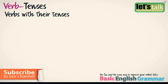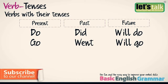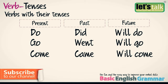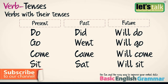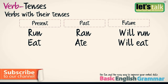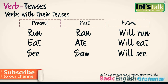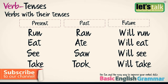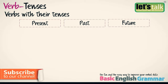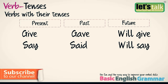Now let's look at verbs with their tenses. Do, Did, Will Do. Go, Went, Will Go. Come, Came, Will Come. Sit, Sat, Will Sit. Run, Ran, Will Run. Eat, Ate, Will Eat. See, Saw, Will See. Take, Took, Will Take. Give, Gave, Will Give. Say, Said, Will Say.